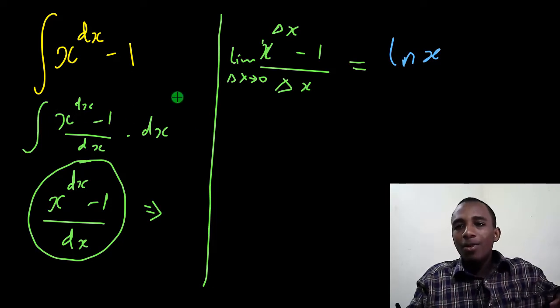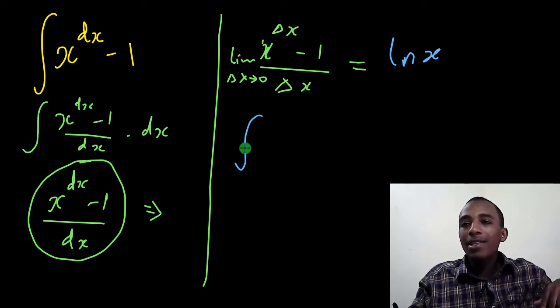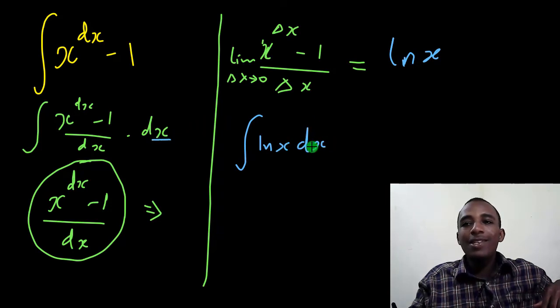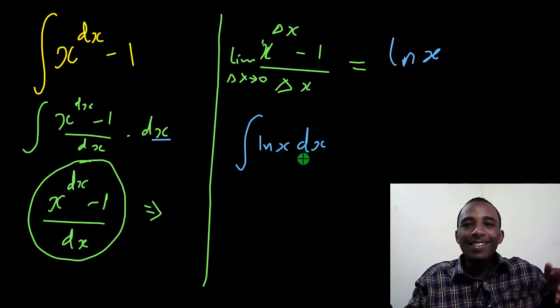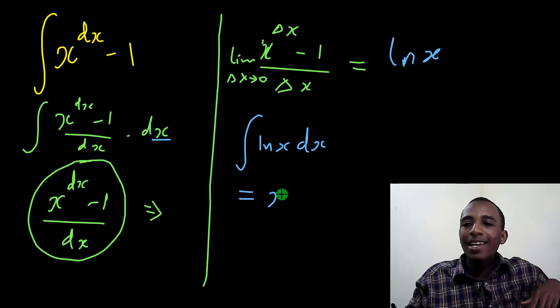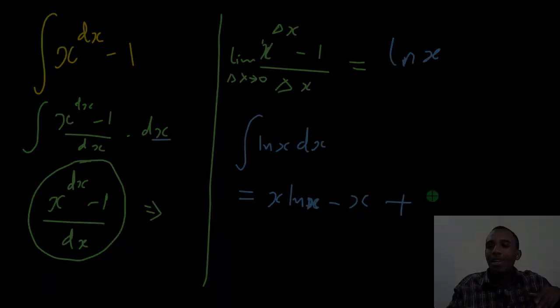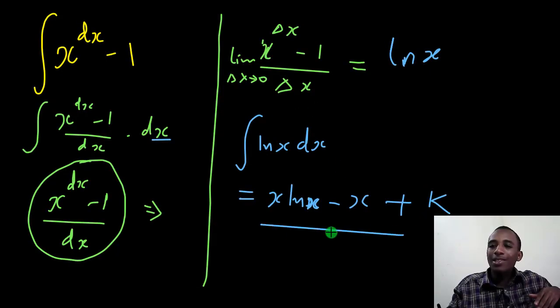I'm going to rewrite this integral now as the integral of natural log of x times dx. And there we go, the integral of ln x dx. This is something we know very well. This is x ln x minus x. This is indefinite, so I'll add a constant of integration k.